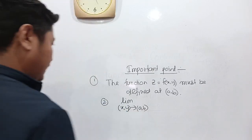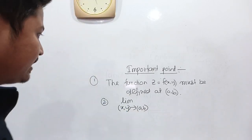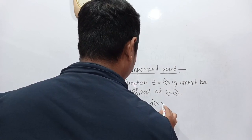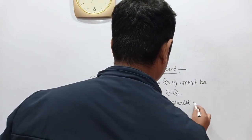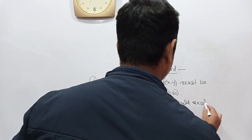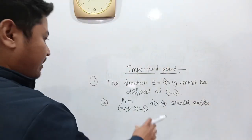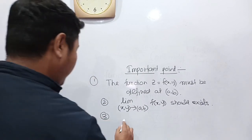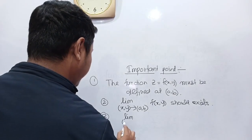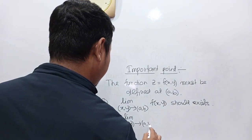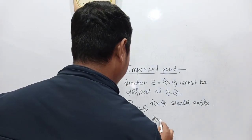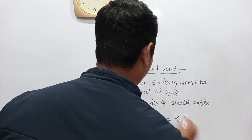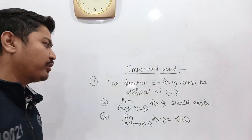While solving problems related to continuity of a function of two variables, number two: the limit should exist. First check whether the limit exists. Number three: limit as (x,y) approaches (a,b) of f(x,y) must be equal to f(a,b).